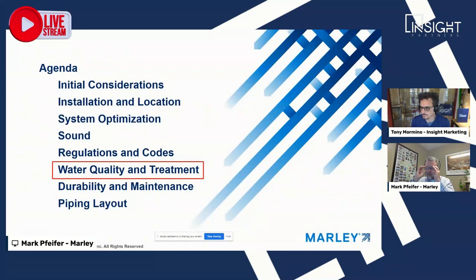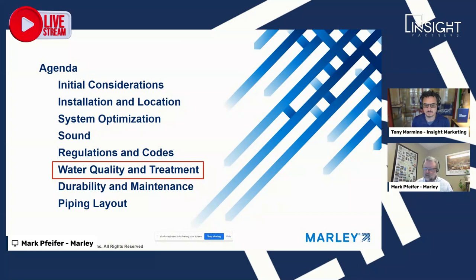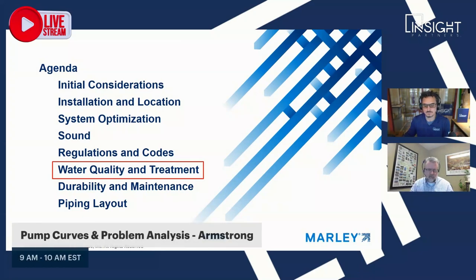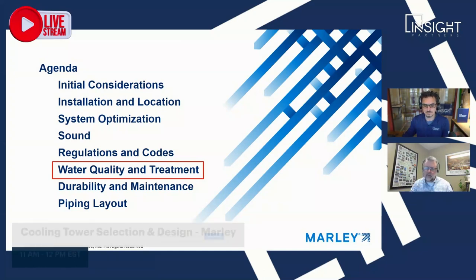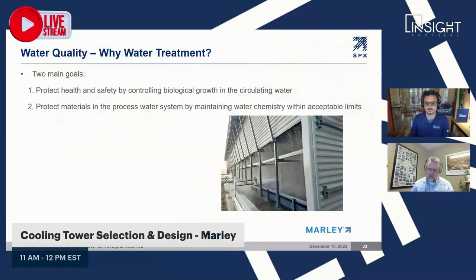Next is water quality and treatment. This is important for design engineers to keep in mind, and especially for installing contractors to ensure it's addressed during initial startup and the first year of operation before handing off to the owner. There are two main goals: protect the equipment materials and prevent biological growth.